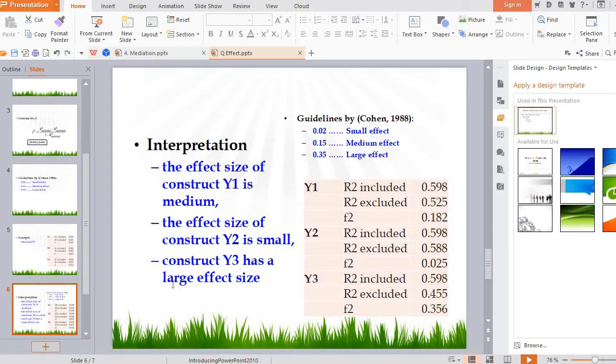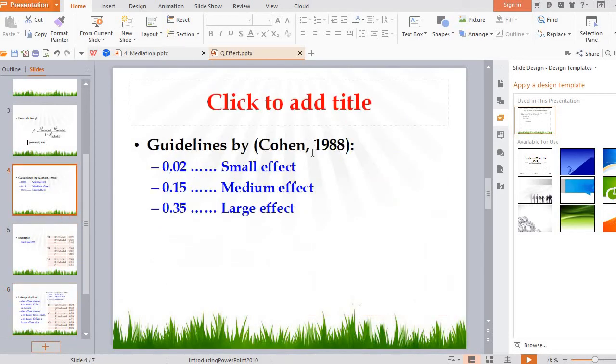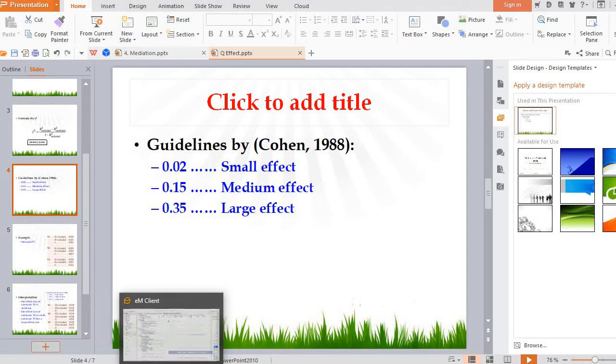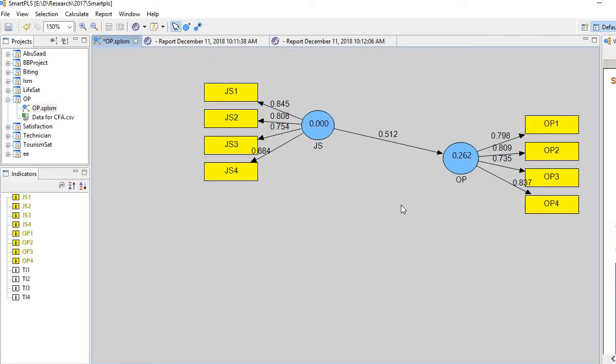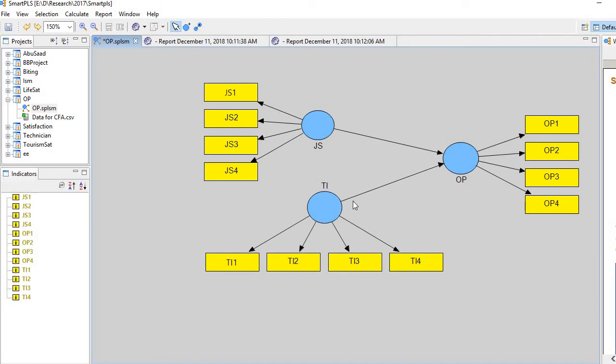So if you look at the criteria, that seems it is the medium effect. In other words, we can say the normative intention has a medium size contribution. Thanks for watching.